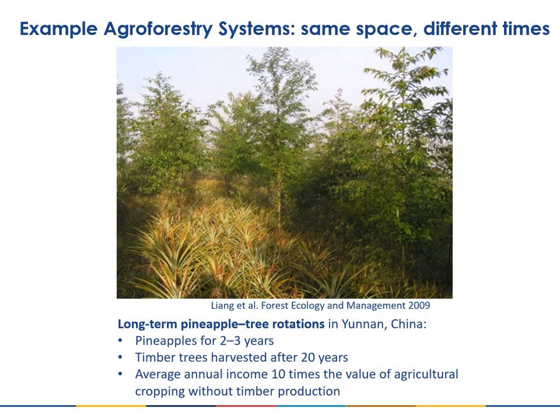Here we see a picture of a system in which the components occupy the same space but are staggered in time. This is in Yunnan, China, where they grow pineapples for two to three years while planting timber trees visible in the background that eventually shade out the pineapple and can be harvested after 20 years. The average annual income to the farmers is estimated to be about 10 times the value of what they would get from just growing agricultural crops alone without the long-term timber production.